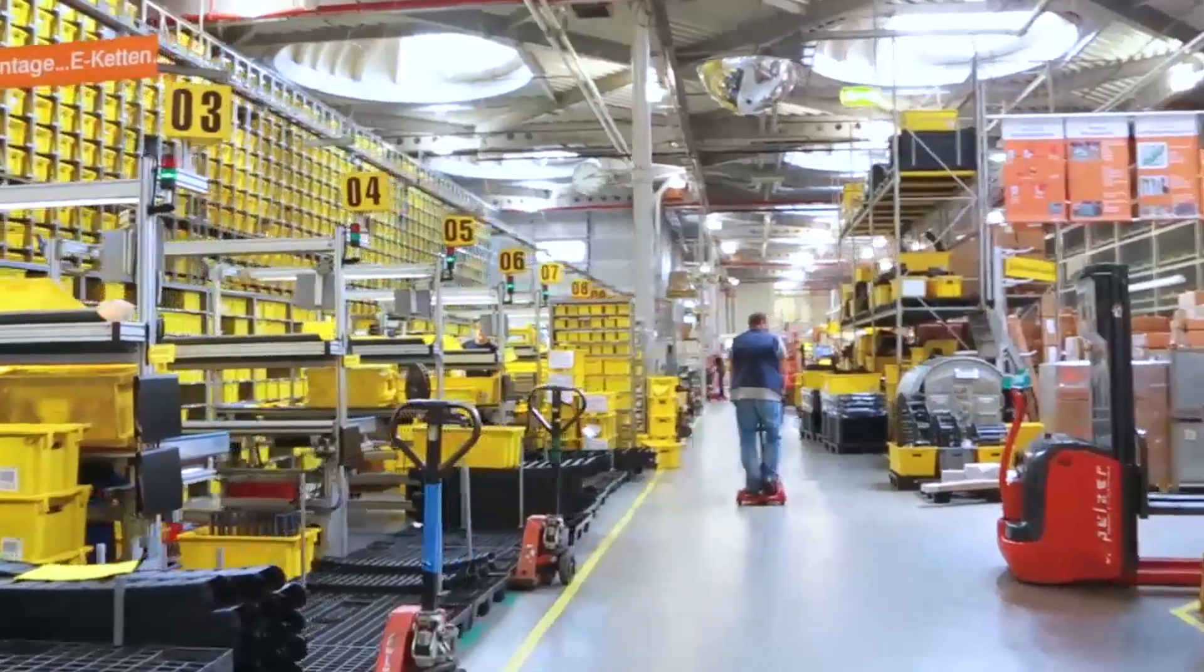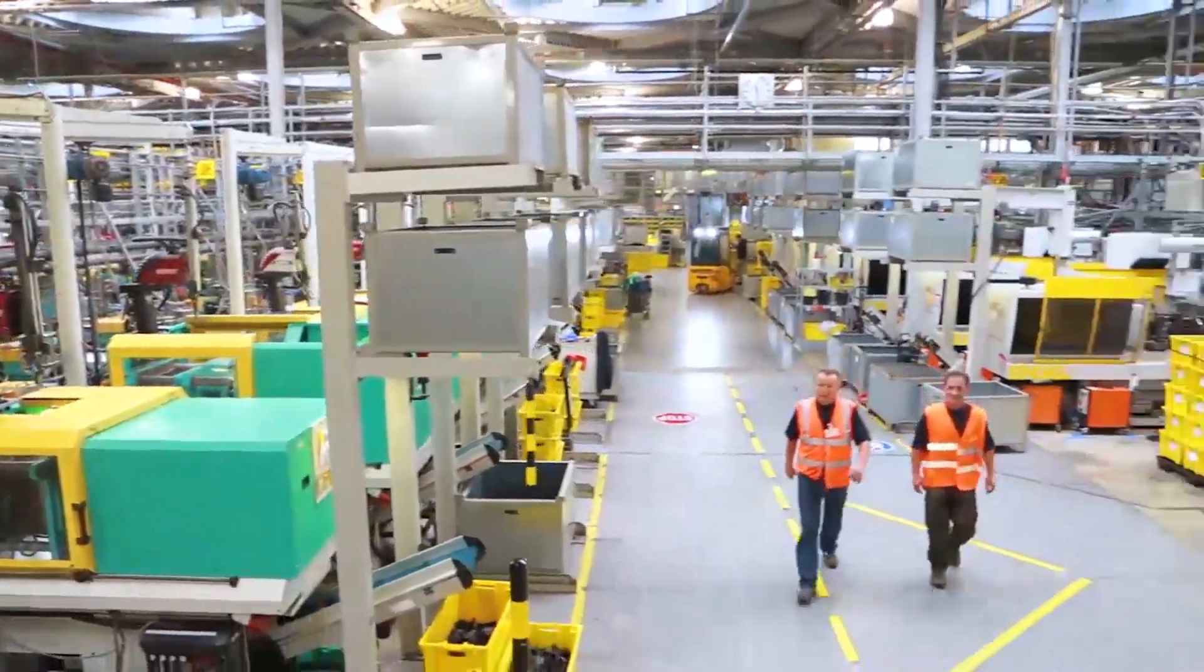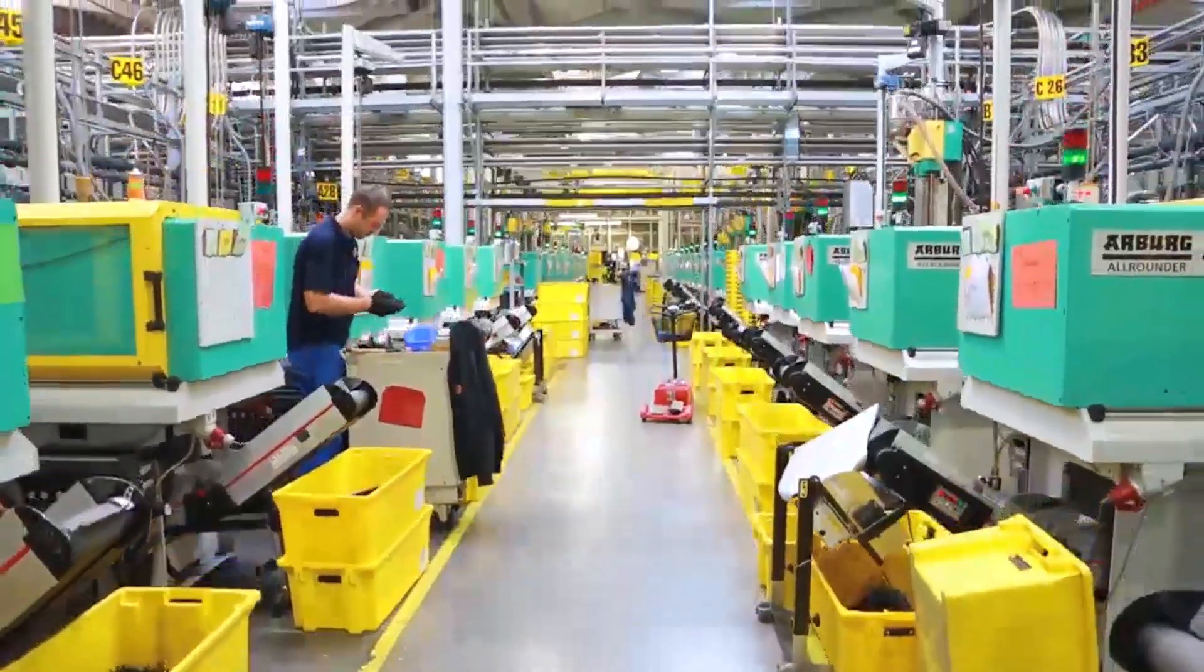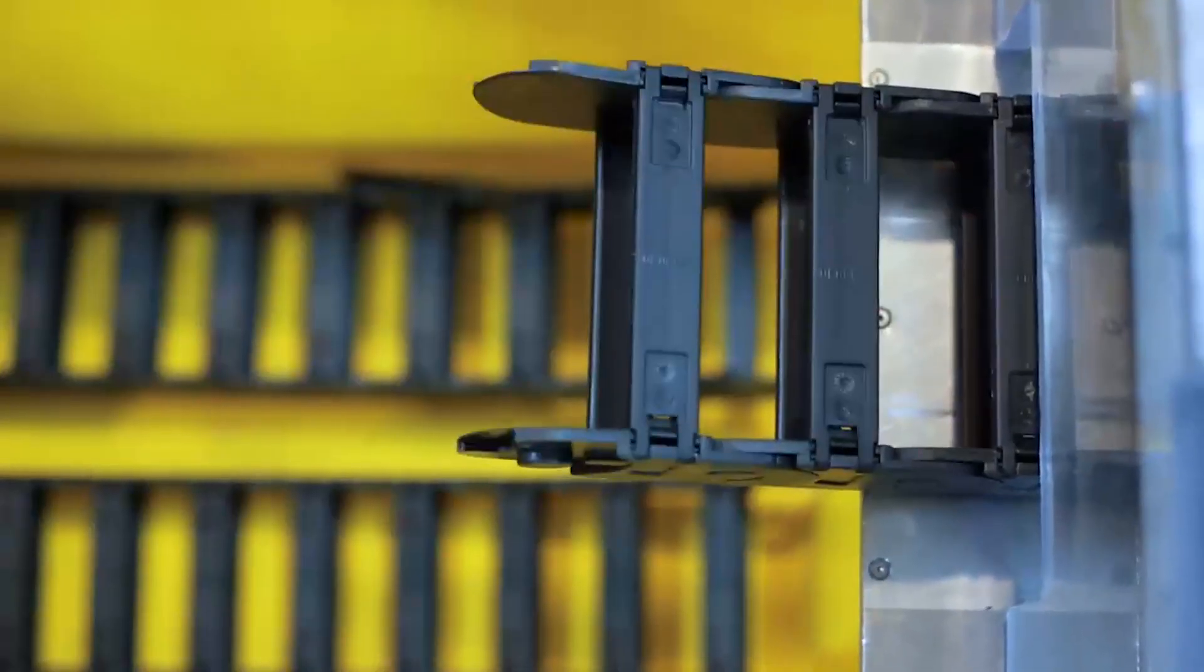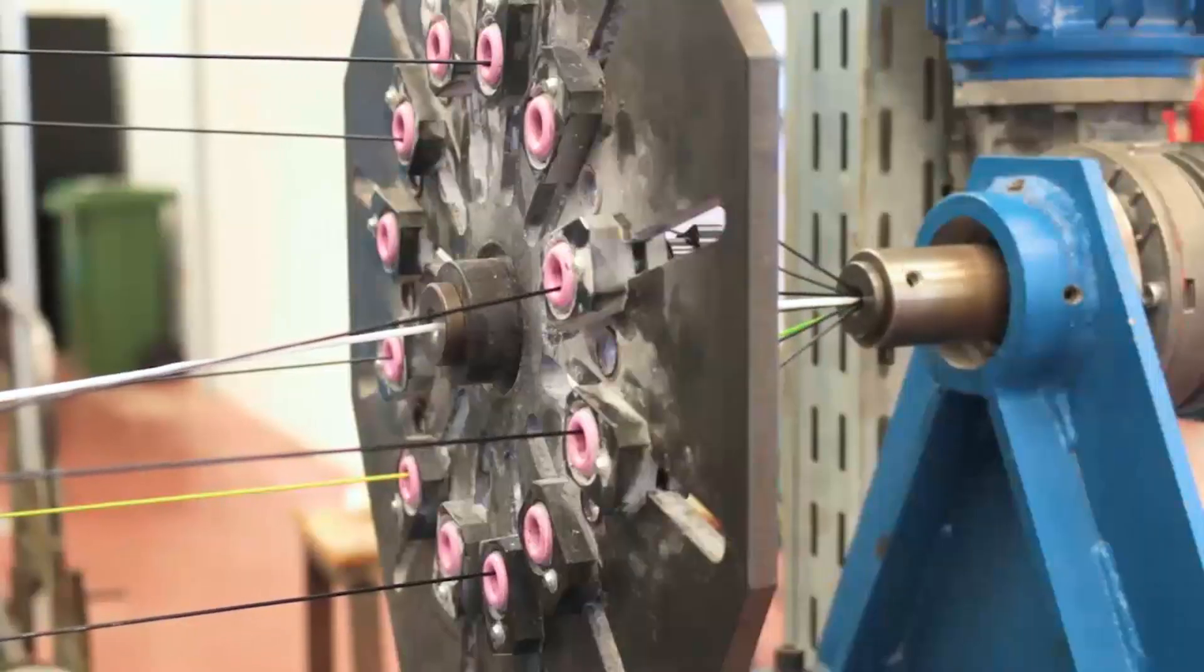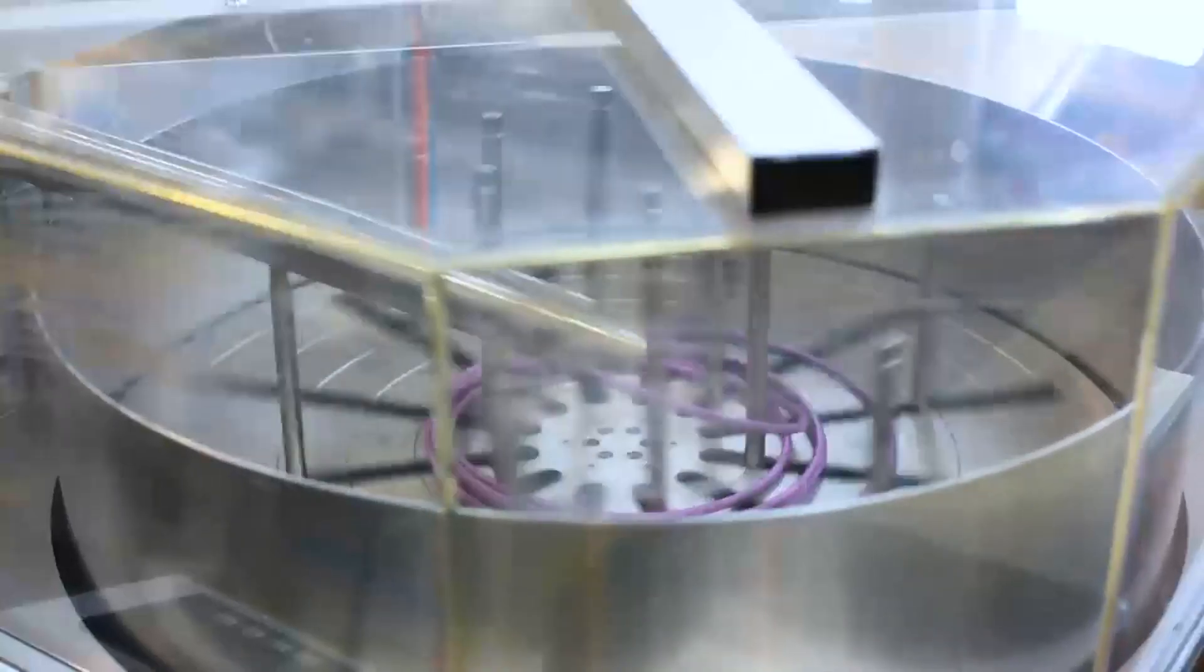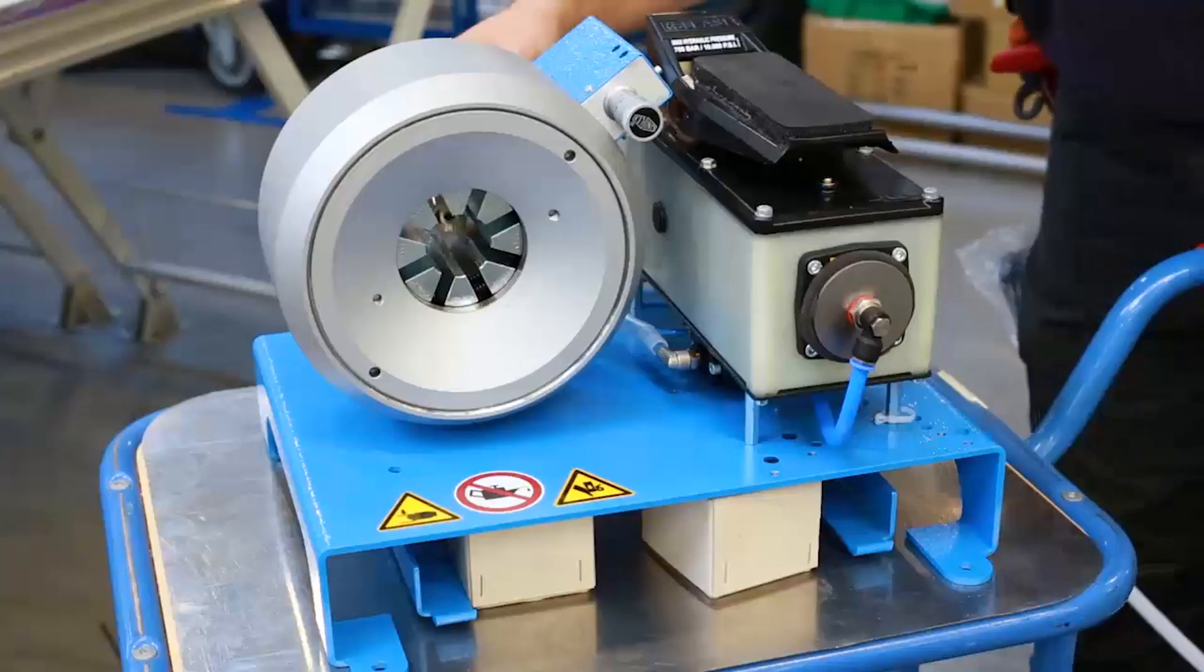The entire ReadyChain system production is characterized by lean processes and a high degree of automation, in the case of chain injection molding and preassembly, in cable manufacture, cable preparation, and hose fitting.